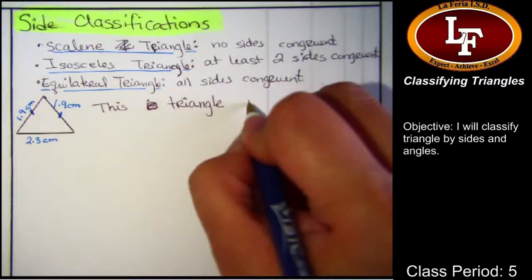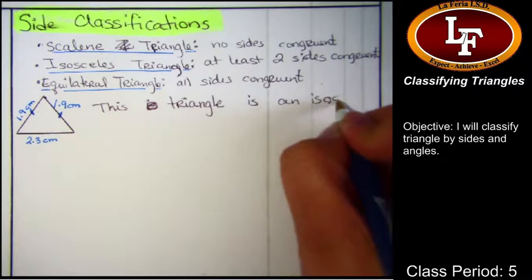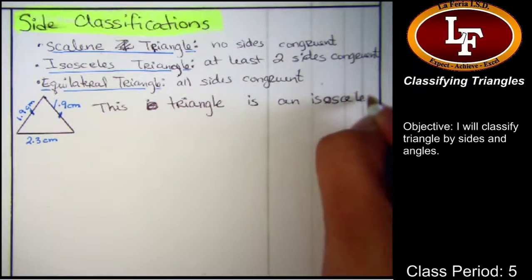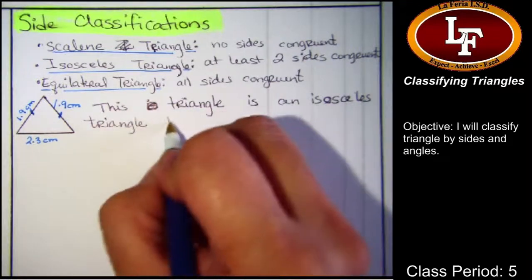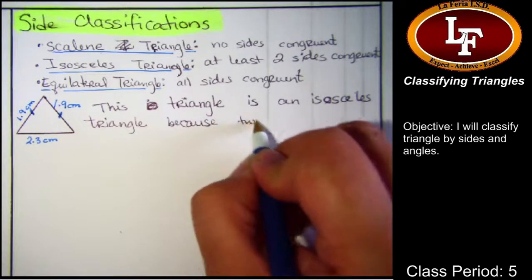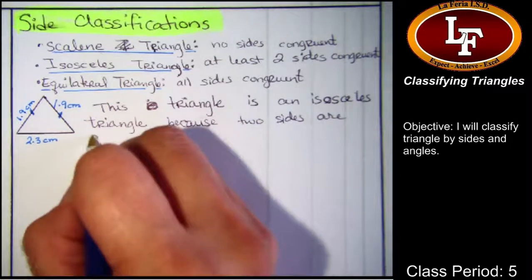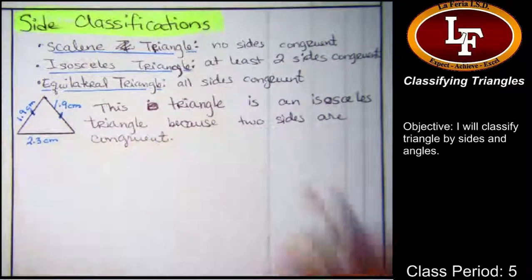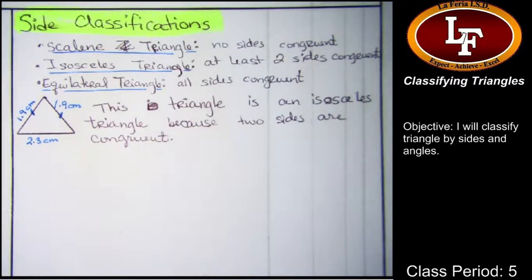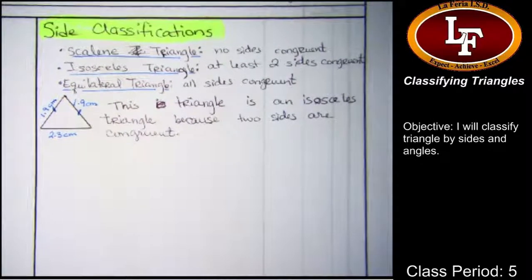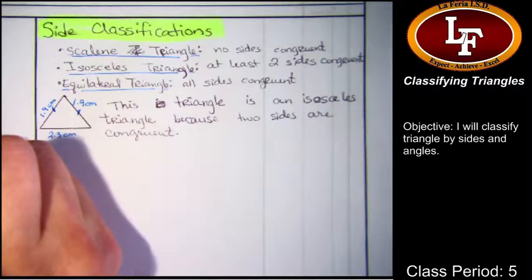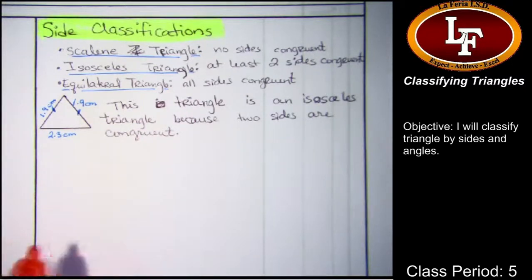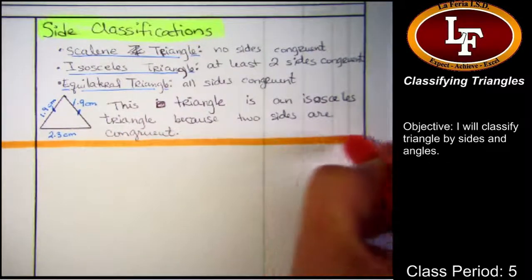This triangle is an isosceles. When you write your sentence, please make sure that you write the kind of triangle that you drew, not the kind of triangle that I drew. So mine is an isosceles triangle because two sides are congruent. If you drew a scalene, you'll want to write that no sides are congruent. If you drew an equilateral, you'll want to write that all sides are congruent. And congratulations to those of you who did it. You did good.